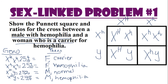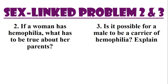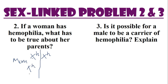Two more problems. If a woman has hemophilia — X^h X^h — what must be true about her parents? Half your DNA comes from each parent. The mother must have at least one X^h, so mom is either a carrier (X^H X^h) or has hemophilia herself (X^h X^h). The father gave an X^h, and since Y makes him male, the father must have hemophilia (X^h Y).